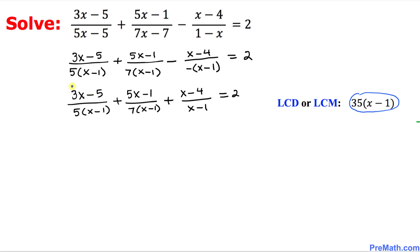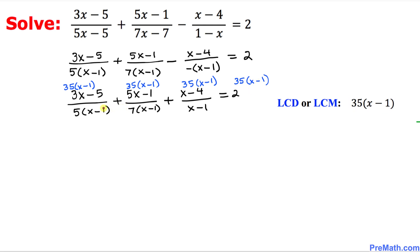Now we are going to multiply 35 times x minus 1 — this least common denominator — across the board with this equation. We multiply it with the first fraction, with the second fraction, with the third fraction, and likewise with the right-hand side as well.